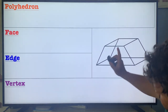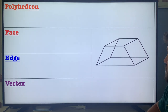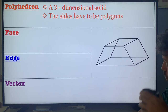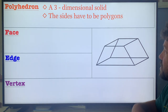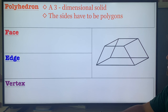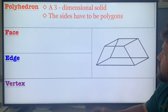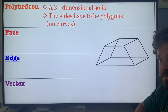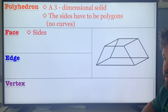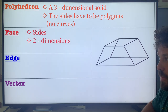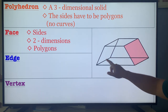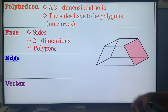Now, what is a polyhedron? It's a three-dimensional solid where the sides have to be polygons — meaning no curves — and the sides will intersect with no open spaces. There are three pieces to a polyhedron. The first is a face: these are the sides. If you had a box, the flat cardboard pieces would be your faces — the two-dimensional polygon pieces. So the trapezoids on front and back are a face, left and right are a face, top and bottom are a face.